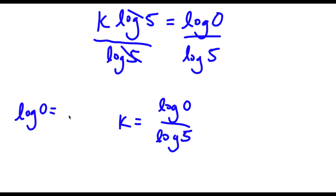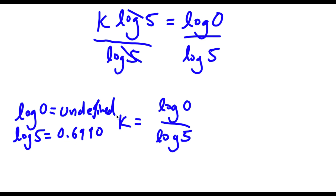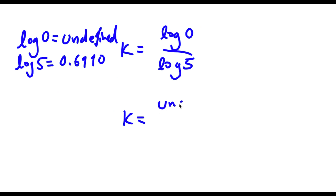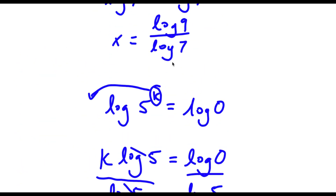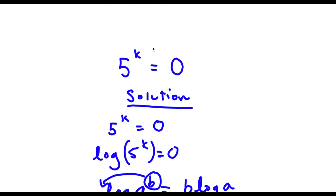Now, log 0 is actually undefined. And log 5 is equal to 0.6990. So k is equal to undefined over 0.6990. You can't divide undefined by anything because it's simply undefined. So this means that k is just undefined — it has no value. You can't take the log of 0. Also, you can't take the power of any number and make it 0, because 0 is not possible. You can get 1 — if you took 5 to the power of 0, that would equal 1 — but 0 is impossible. You can't take the power of a number and get 0.